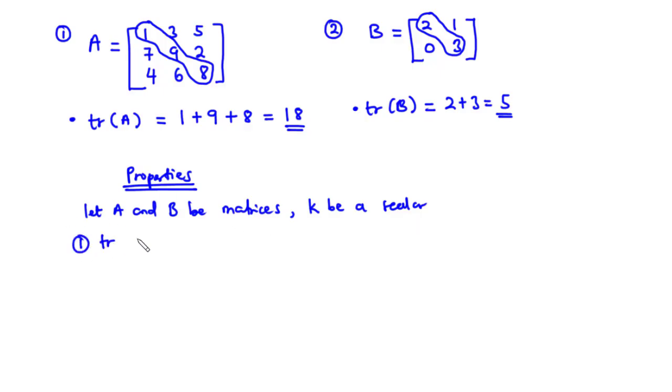Property 1: The trace of matrix A is equal to the trace of the transpose of matrix A.